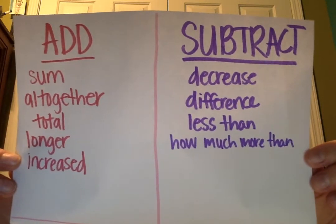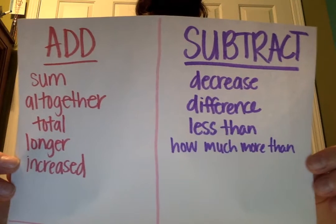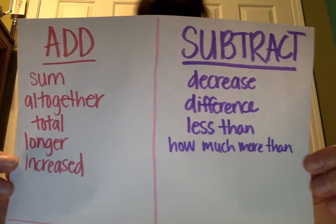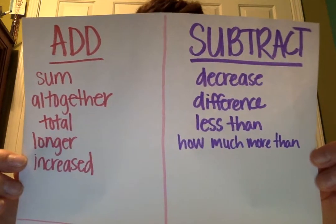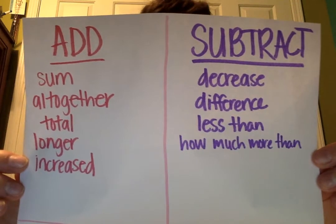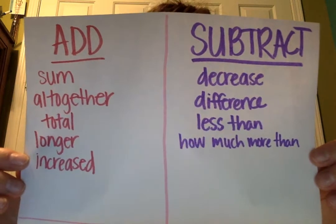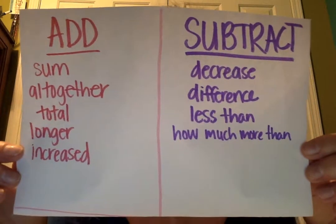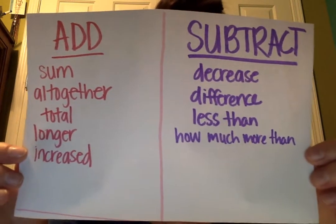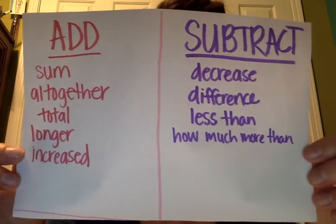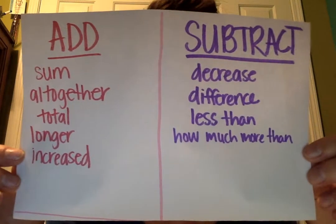Total, longer, or increased. Remember that when we are adding, we are just getting bigger. Sum is obviously the answer — when you find the sum, you're finding the answer to an addition problem. Increased, longer, and total all mean getting bigger. Altogether or together means grouping things together, making one big group and adding it together.